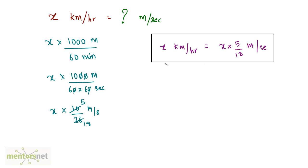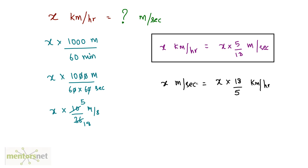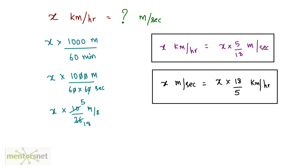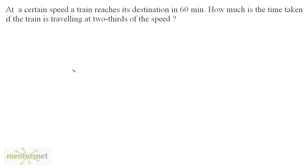Whenever you need to convert a speed from kilometers per hour to meters per second, multiply by 5/18. Similarly, if you are given a speed of x meters per second and need to convert to kilometers per hour, multiply by 18/5. So x meters per second equals x times 18/5 kilometers per hour.